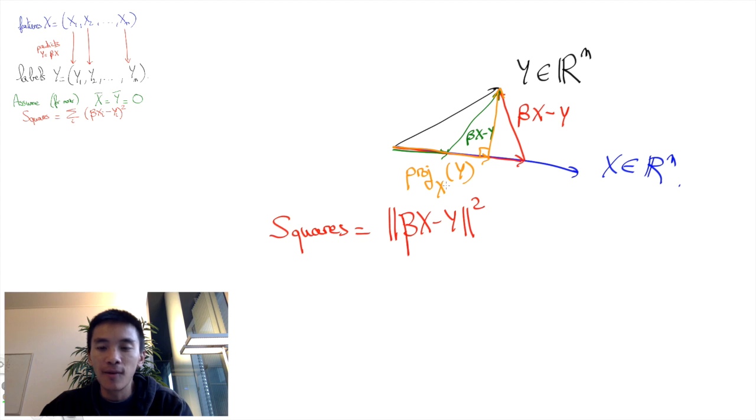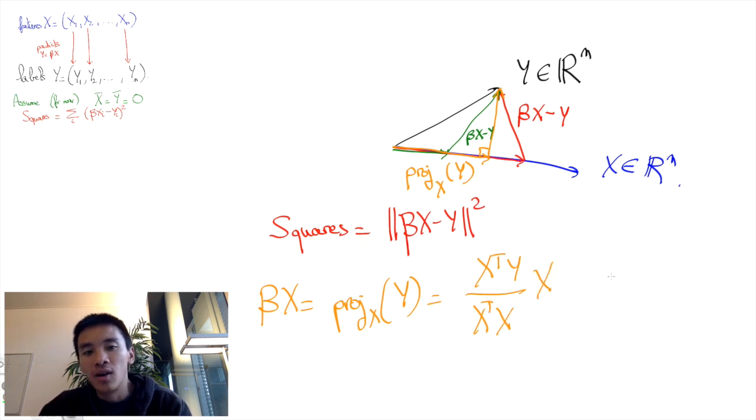This tells us that the result beta*X of the orthogonal projection is going to be the projection on X of Y, which equals (X^T * Y) / (X^T * X) times X, where the denominator X^T*X can be understood as the size of the vector X squared. You can see that on the numerator we have X^T and X, so we have sort of two times the size of X that gets multiplied.